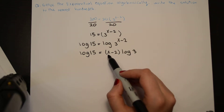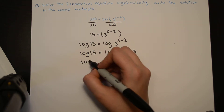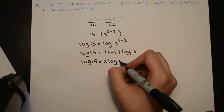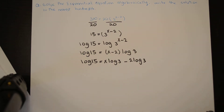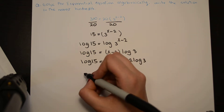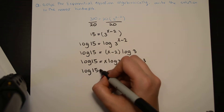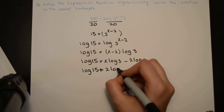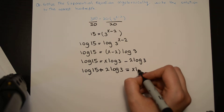We need to expand x minus 2 by multiplying both terms by log 3, which gives us log 15 equals x log 3 minus 2 log 3. The whole point is to isolate x, so we bring the constant to the other side: log 15 plus 2 log 3 equals x log 3.